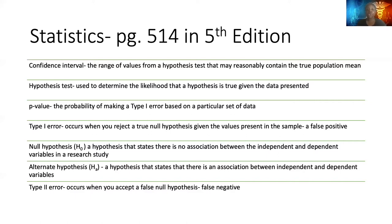A type two error occurs when you accept a false null hypothesis — a false negative. A type one error occurs when you reject a true null hypothesis, giving the values present in the sample a false positive. To better explain this, I'm going to present some examples, and I believe this should help it all make sense.